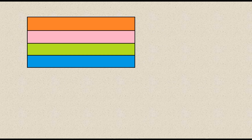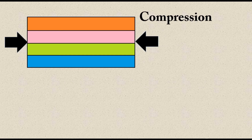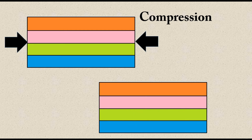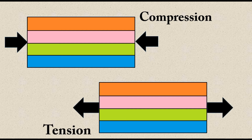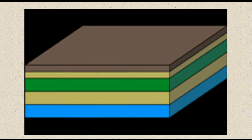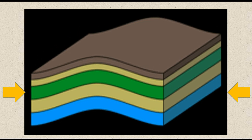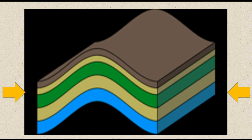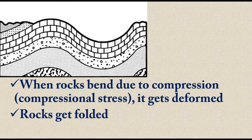Imagine a part of the earth's crust with multiple layers of rock. When there is a force pushing it from both sides, that is compression. When there is a force pulling it from both sides, that is tension. When a force compresses the rock from both sides, the shape of the rock changes — this is called deformation. When rock bends due to compressional force, it gets deformed.